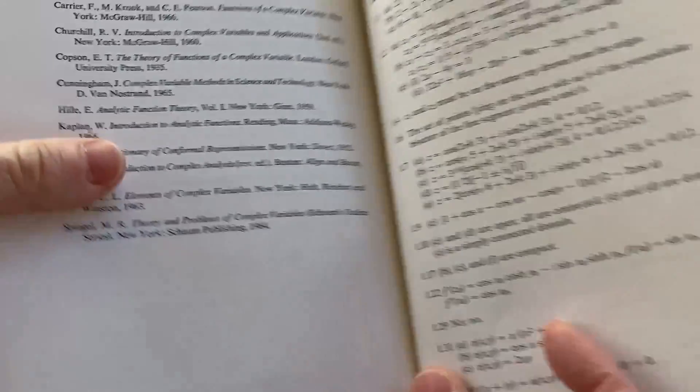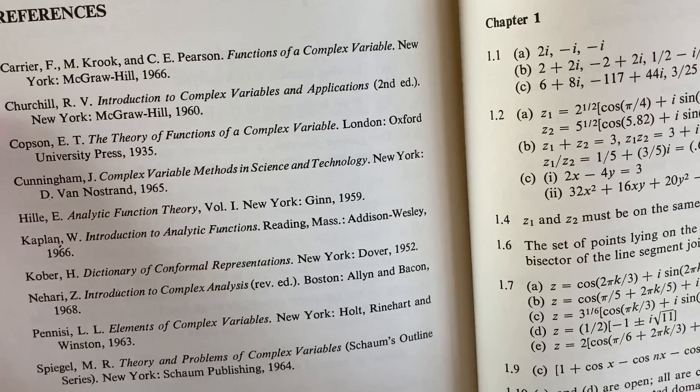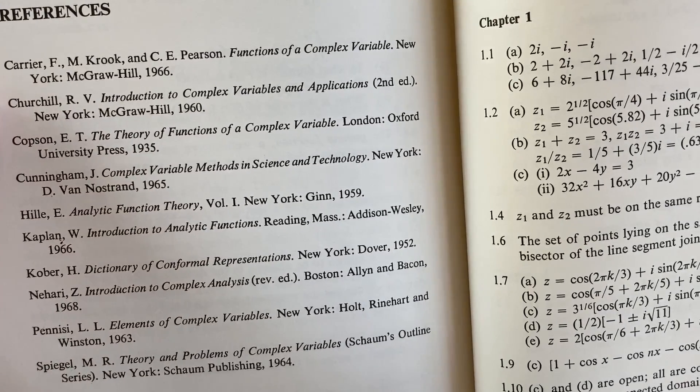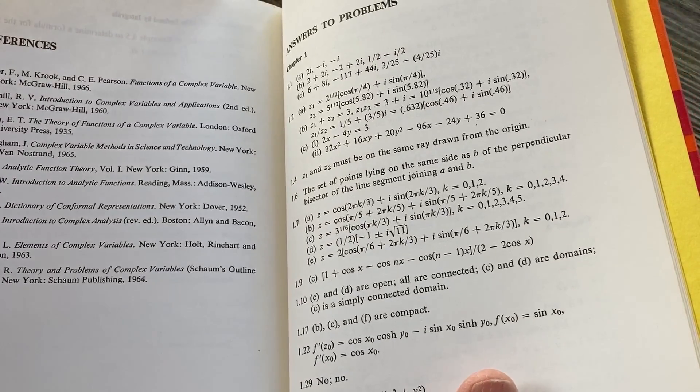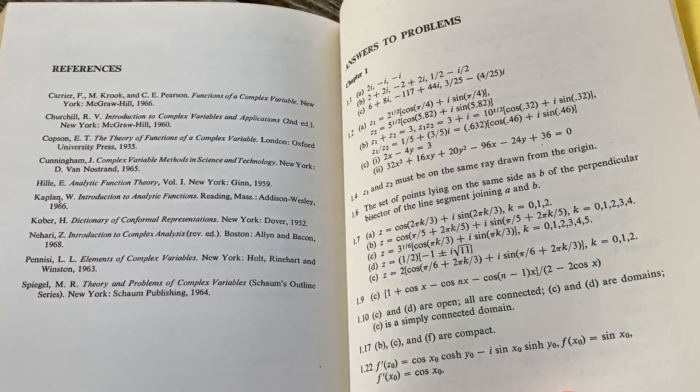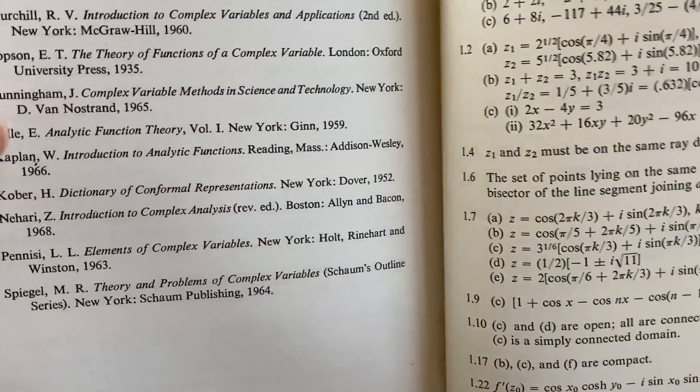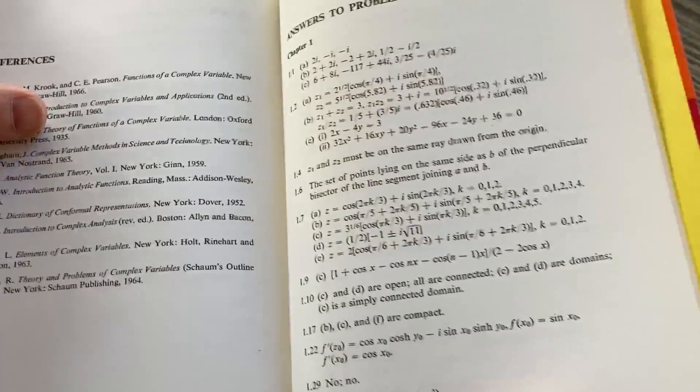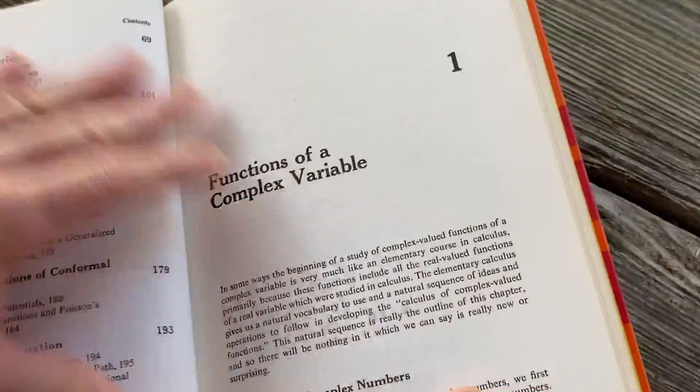And then here's references. These are other books on complex variables. I have the one by Churchill and I have the one by Spiegel. I might have some of the others. Some of these I don't have. You got to remember, these are older books. Some of these are probably harder to find because this book is from '73. So notice the date on all of these, they're all prior to '73. Obviously, they're not going to have books that were published in the future as a reference.